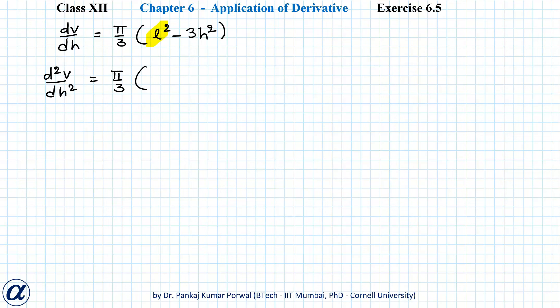And now because h is distance, it will always be positive, so minus 6h will always be negative. So the second derivative will always be negative, so we will have a maximum.